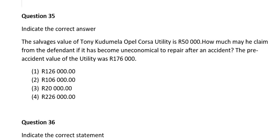Question thirty-five. Indicate the correct answer. The salvage value of Tony Wudumela's Opel utility is 50,000 rand. How much may he claim from the defendant if it has become uneconomical to repair after an accident? The pre-accident value of the utility was 176,000 rand. So 176,000 minus 50,000 gives the answer: 126,000 rand. The correct answer is option number one.